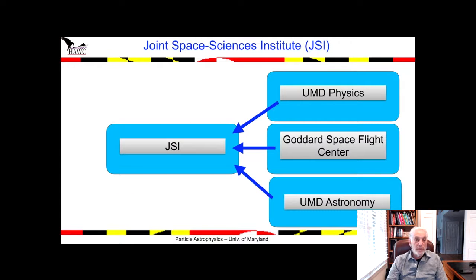We're also part of the Joint Space Sciences Institute, which brings together scientists from our groups at Maryland in the physics department and astronomy department as well as people from the Goddard Space Flight Center. Goddard is about three or three and a half miles away from Maryland and makes it a very good opportunity to work with us, and our students have opportunities there as well.